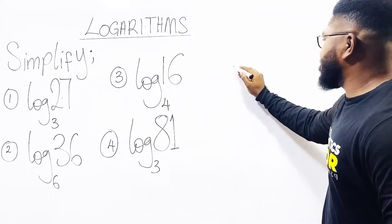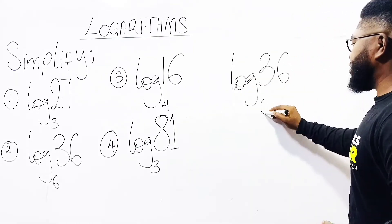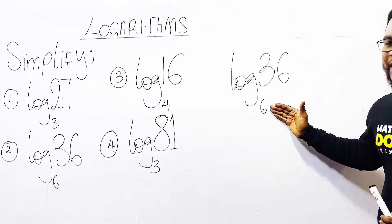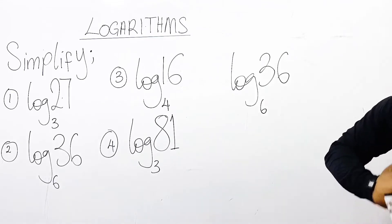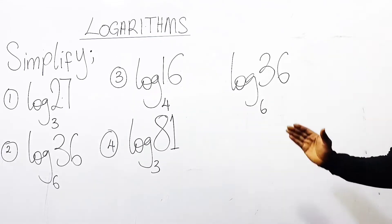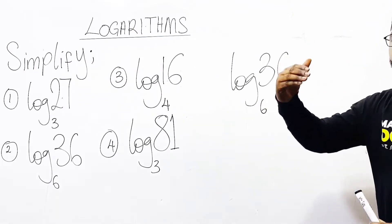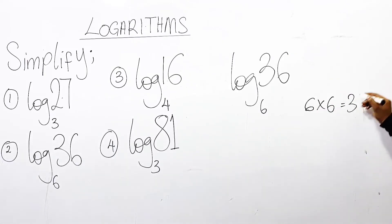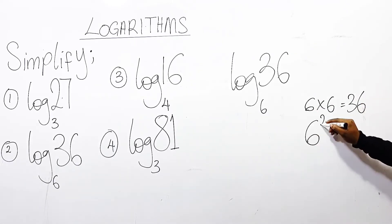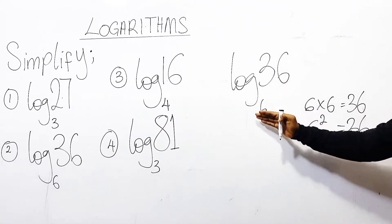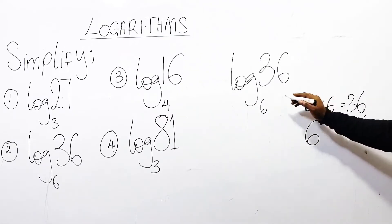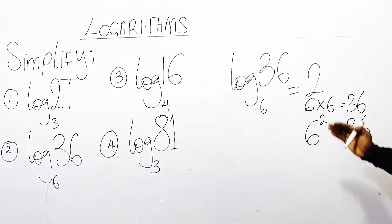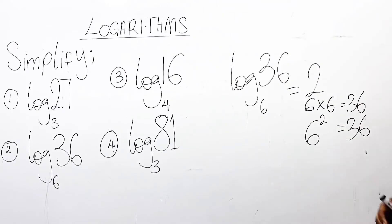I will take the log of 36 base 6. Since we have a logarithm, I will use the base as my target. How many times must this base 6 multiply itself to produce 36? Or what is the power of base 6 so that I can get 36? We can say 6 times 6 is 36, that is 6 raised to the power of 2 is 36. Since base 6 must multiply itself 2 times to produce 36, the log of 36 base 6 equals 2 — meaning 6 raised to the power of 2 is 36, or 6 times itself 2 times gives me 36.